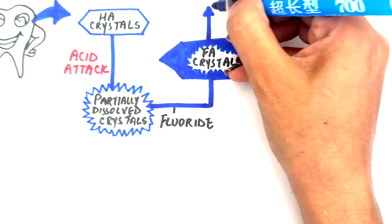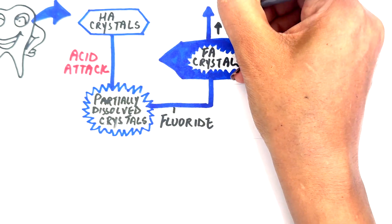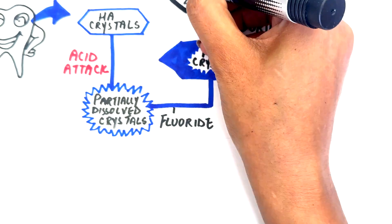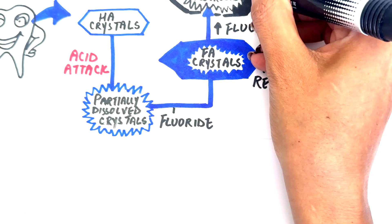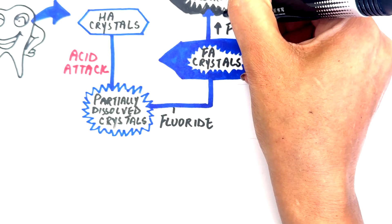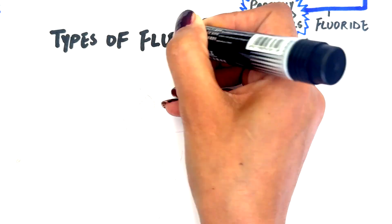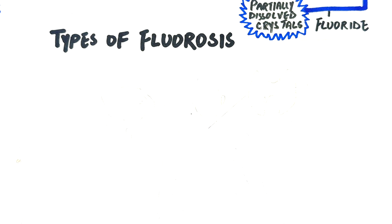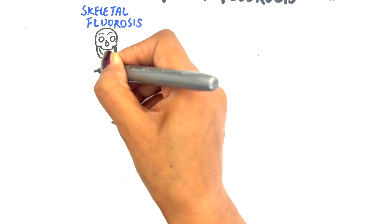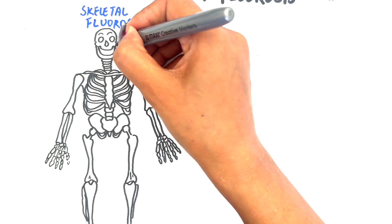However, when too much fluoride is consumed, it can disrupt this process, leading to dental fluorosis — an early sign of fluoride toxicity. Fluoride overuse doesn't only affect teeth; it can also cause skeletal and non-skeletal fluorosis. Skeletal fluorosis occurs when excess fluoride accumulates in bones over many years, leading to changes in bone structure.